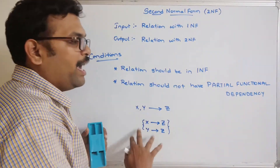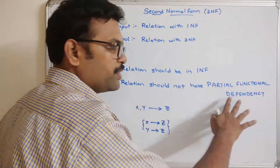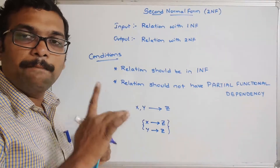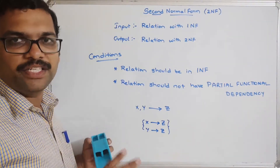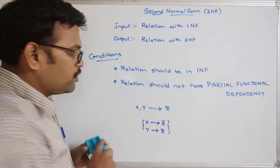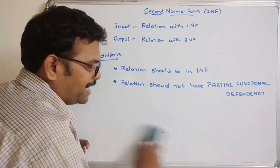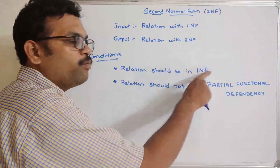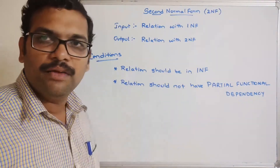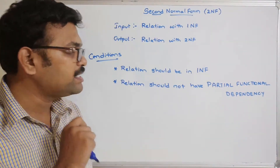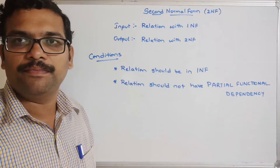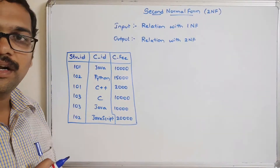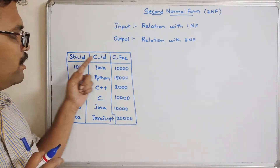We have to find out whether there is a partial functional dependency or not. If so, we have to remove it by decomposing the relation into sub-relations. So the two conditions to satisfy for 2NF are: the relation should be in 1NF, and the relation should not have partial functional dependencies. Now let us check with a small example. There are three attributes: student ID, course ID, and course fee.